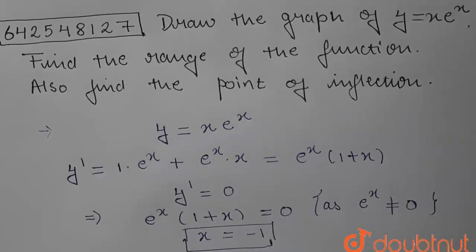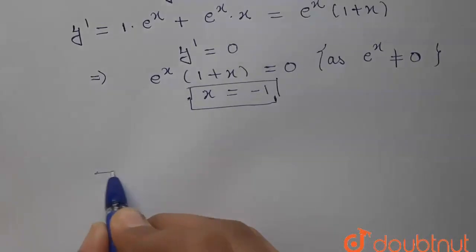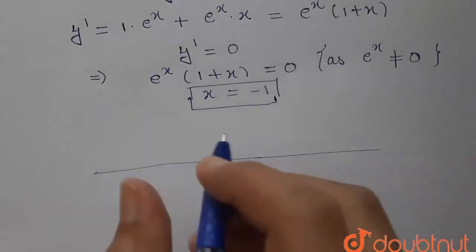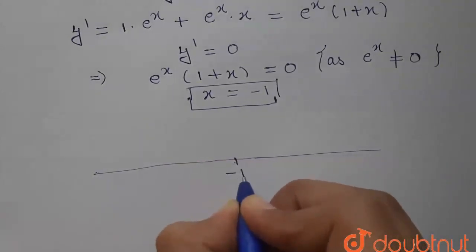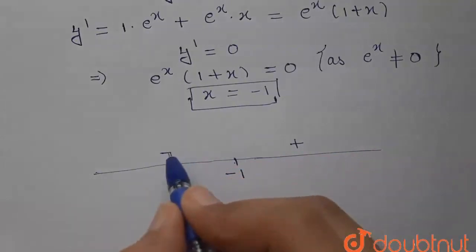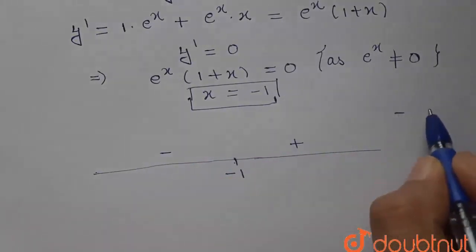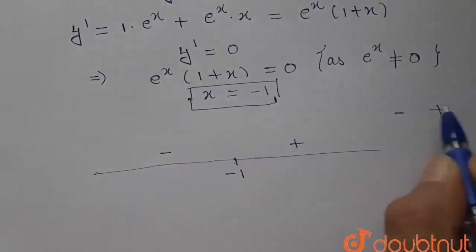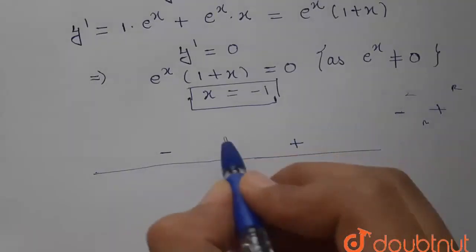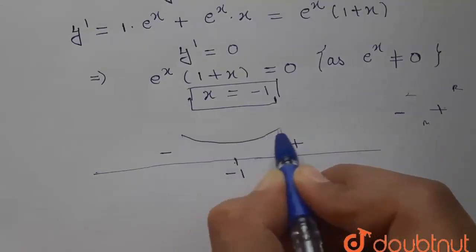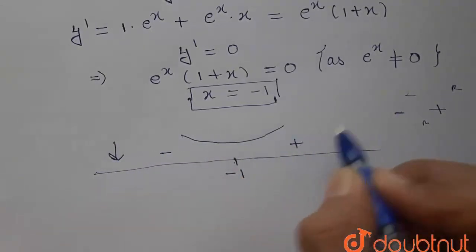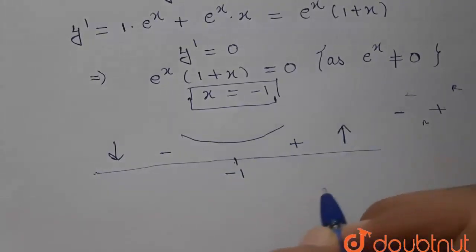Now we plot the values on the number line to find the increasing and decreasing nature. At x equals minus 1, the sign changes from negative to positive — from left to right — meaning this is a minimum value. So the function is decreasing before x equals minus 1 and increasing after.